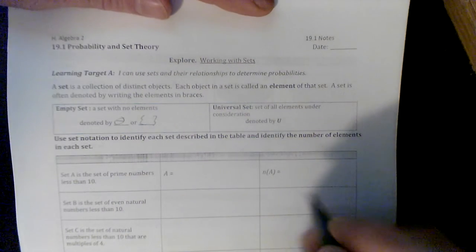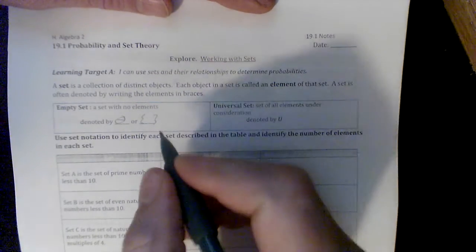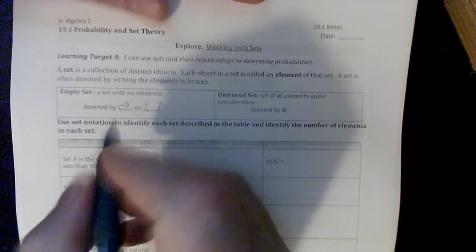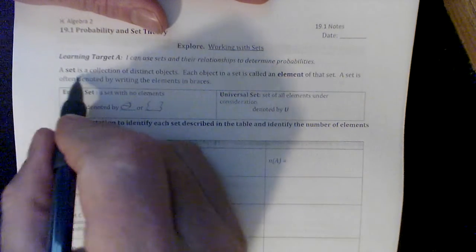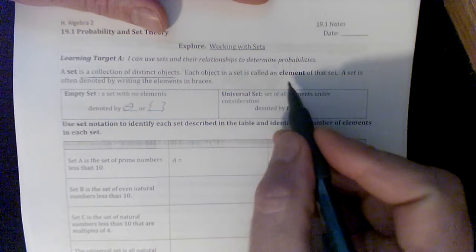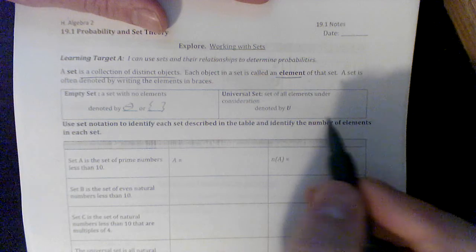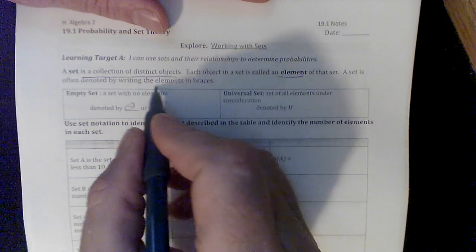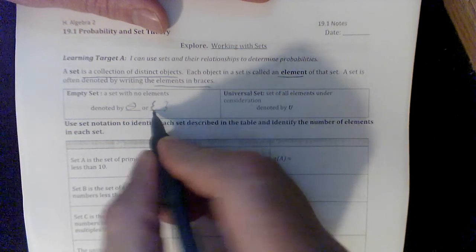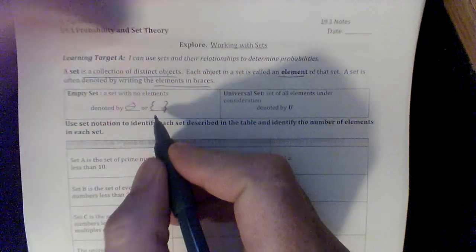Alright, probability and set theory. We're first going to learn some of the notation here. A set is a collection of distinct objects. Each object is called an element if it's in a set. And there's ways of writing these. We use brackets when we're writing stuff.